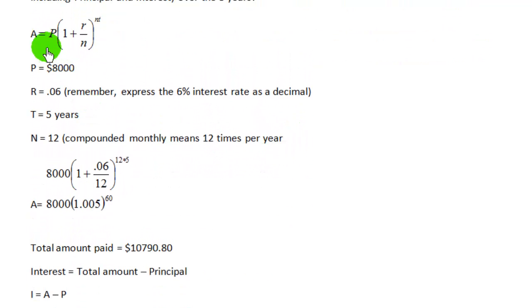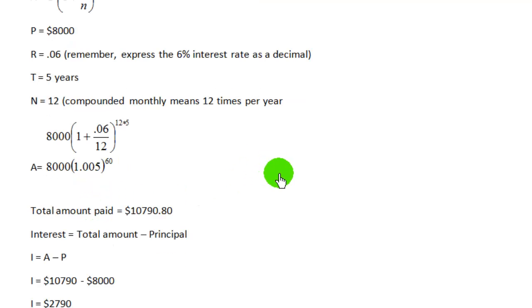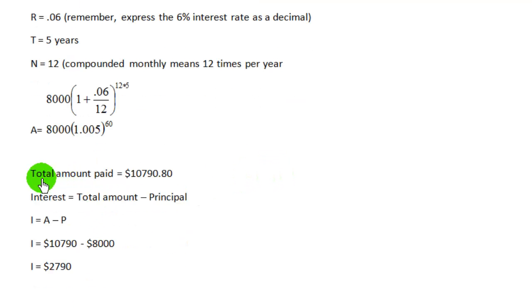We take the formula, A equals P times one plus r over n, raised to the nt power. The principal is $8,000. The rate is .06, the time is five years, and the number of times compounded, since we're compounding monthly, is twelve. $8,000 times the quantity, one plus .06 divided by twelve, raised to the twelve times five power, equals $8,000 times 1.005, raised to the sixtieth power. It gives you a total amount that you will have paid of $10,798.87.